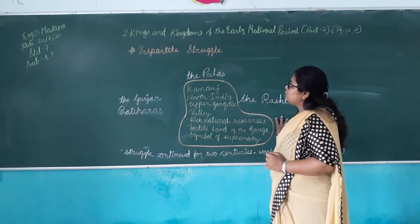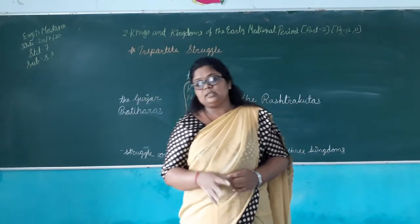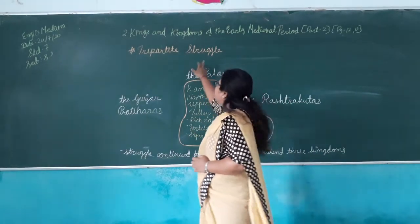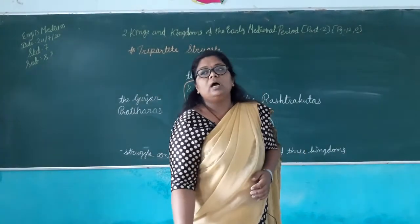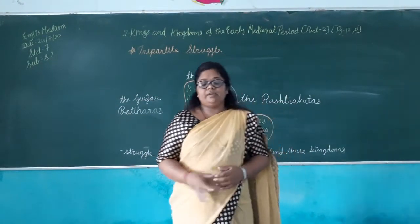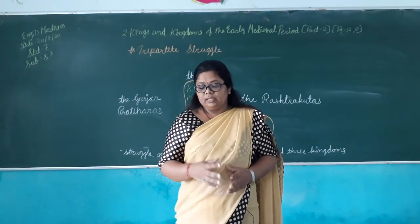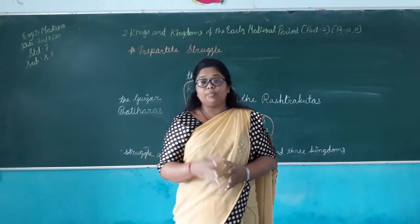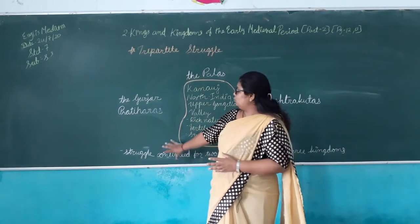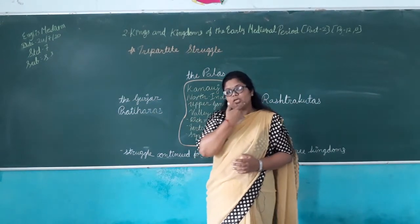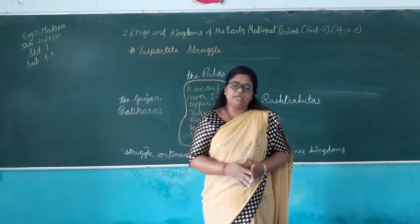In this lesson, we learned about the Palas, the Rashtrakutas, the Gurjara Pratiharas, and the Tripartite Struggle. In our next lesson, we are going to learn about the administration of regional kingdoms, economy, Mahmud of Ghazni, Muhammad Ghori, the Battle of Tarain, reasons for Prithviraj's defeat, and the Chola kingdom and Chola administration. Till then, read the book carefully, highlight the important notes, and make note of them in your notebook. Bye!